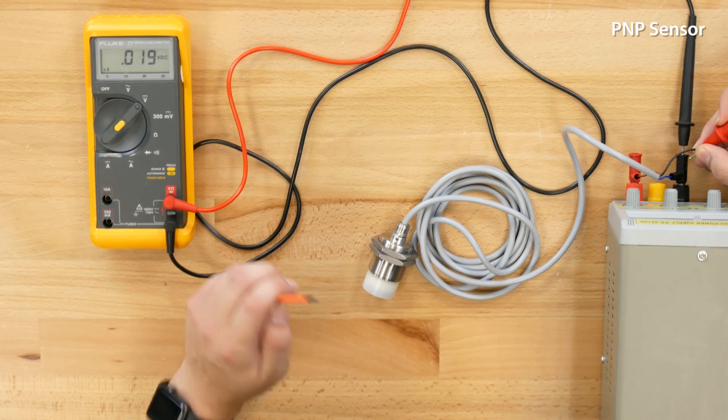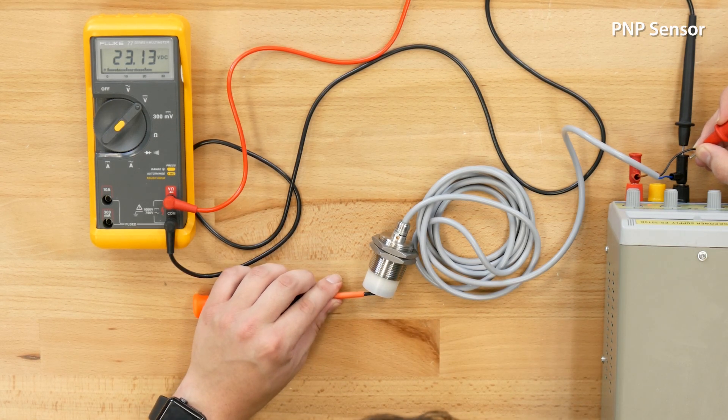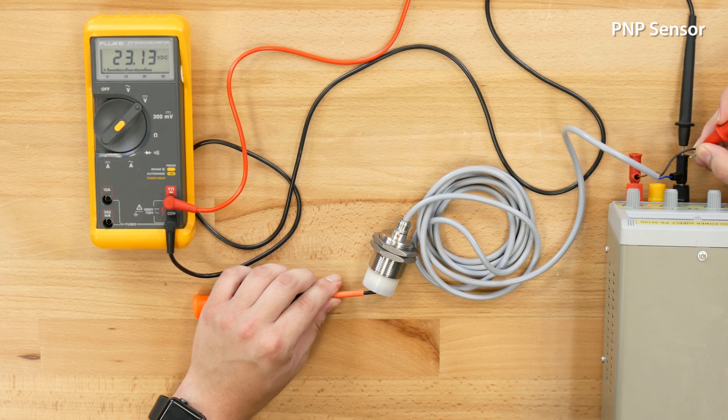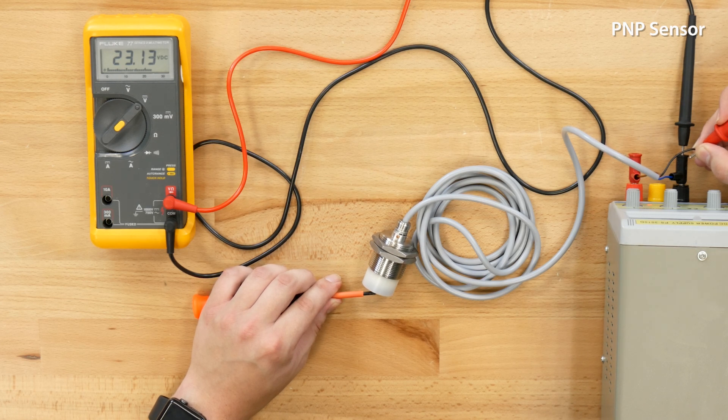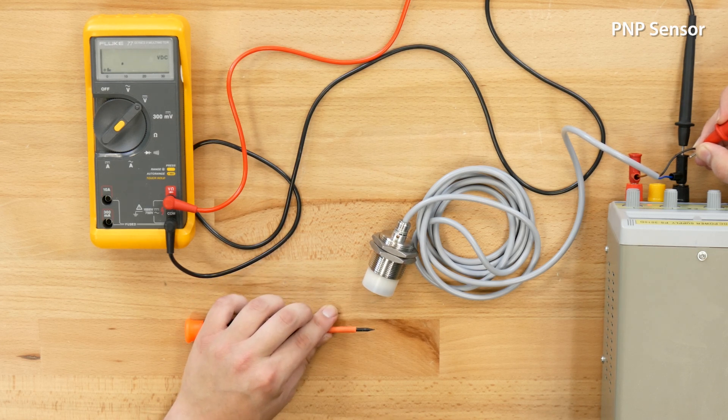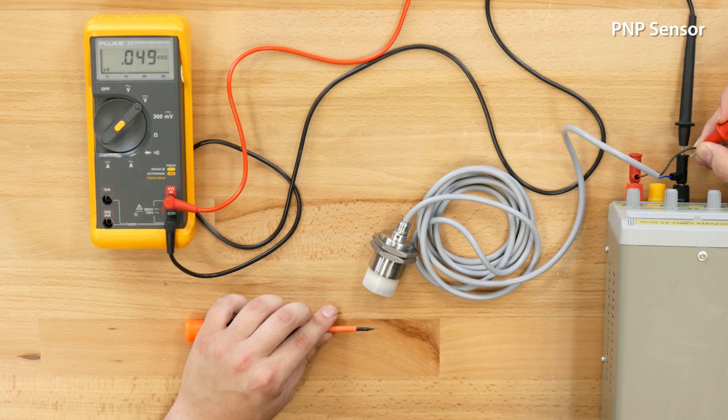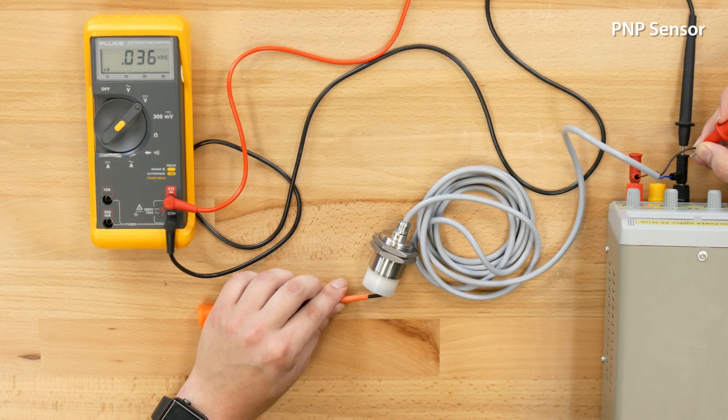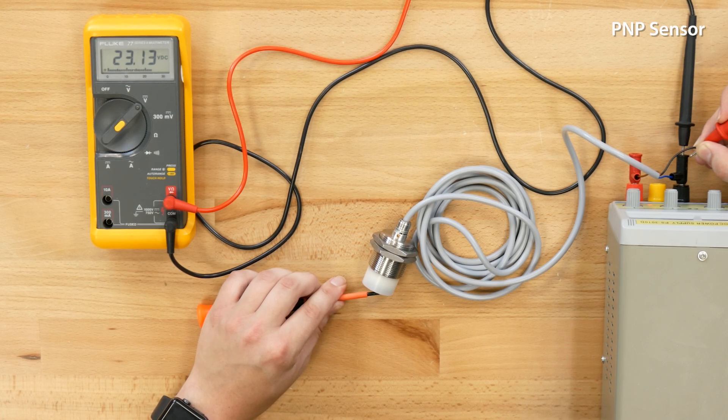Now we can take a piece of metal again and trigger this and we see it jump up to about 24 volts there right in that range. You can take it out and see it drop back down to near zero volts and see it change state again.